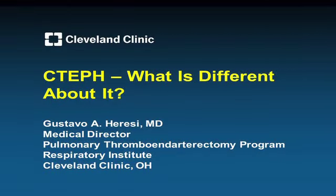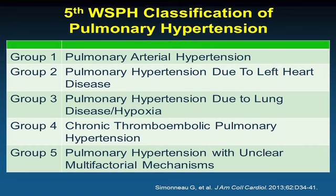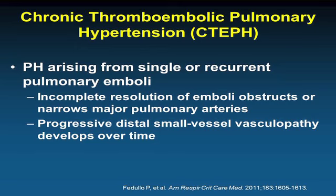Chronic thromboembolic pulmonary hypertension is classified as group 4 disease. The unique thing about this group is that it is a type of pulmonary hypertension that can be cured via a surgical procedure called pulmonary thromboendarterectomy. It arises from single or recurrent pulmonary emboli, beginning with acute pulmonary embolism, followed by incomplete resolution, progressive scarring of pulmonary vascular segments, and development of small vessel disease even in areas without thrombotic occlusion.